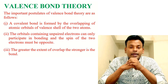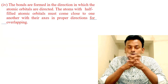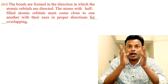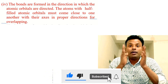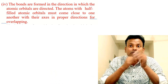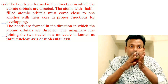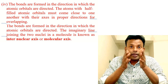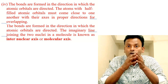Point three: the greater the extent of overlap, the stronger is the bond. Point four: the bonds are formed in the direction in which the atomic orbitals are directed. The atom with half-filled atomic orbitals must come closer to one another with their axes in proper directions for overlapping. The imaginary line joining the two nuclei in a molecule is known as the internuclear axis or molecular axis.